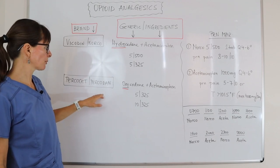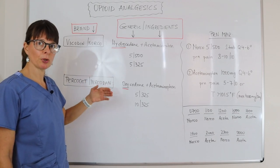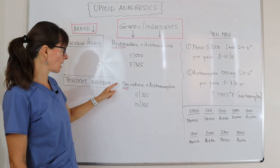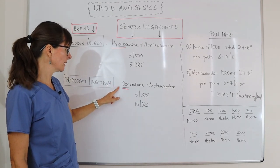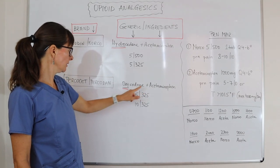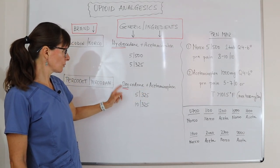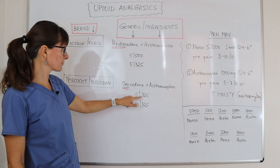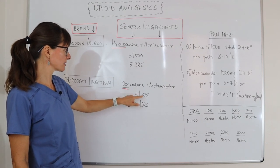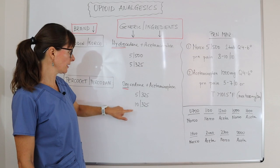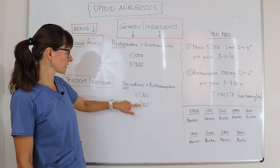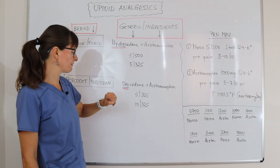For Percocet or Percodan, the opioid component is a different codone — oxycodone — combined with acetaminophen. You might see dosages like 5-325, meaning 5 mg oxycodone and 325 mg acetaminophen, or 10-325, meaning 10 mg oxycodone and 325 mg acetaminophen.